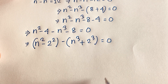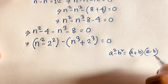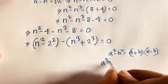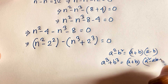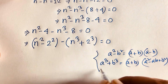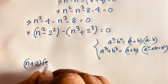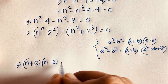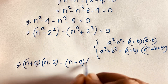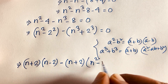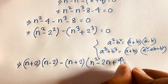Now I apply two algebraic identities: a squared minus b squared equals (a+b)(a-b), and a cubed plus b cubed equals (a+b)(a squared minus ab plus b squared). So n squared minus 2 squared becomes (n+2)(n-2), and negative n cubed minus 8 becomes negative (n cubed plus 2 cubed), which is negative (n+2)(n squared minus 2n plus 4).